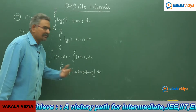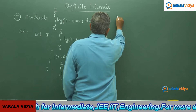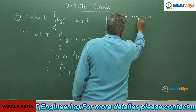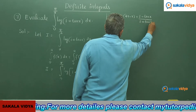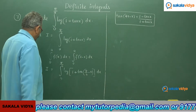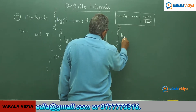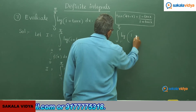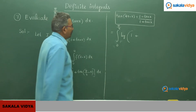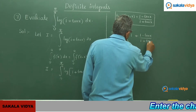Now, tan(45 minus x) is equal to (1 minus tan x) by (1 plus tan x). This is the formula. So now we can have integral 0 to pi by 4 of log of 1 plus this, where tan(pi/4 minus x) is replaced by (1 minus tan x)/(1 plus tan x), giving us log of 1 plus (1 minus tan x)/(1 plus tan x) dx.